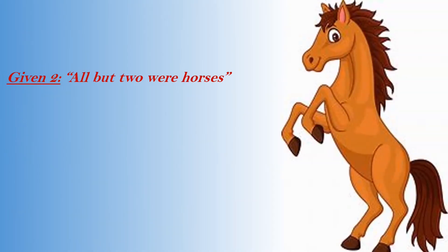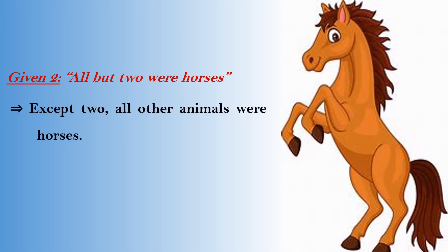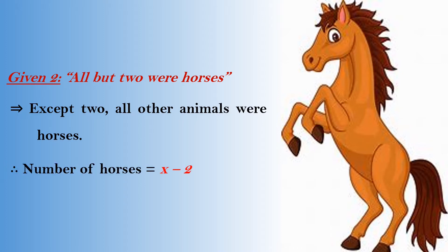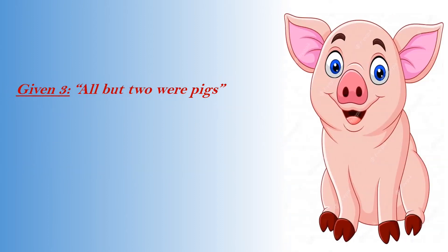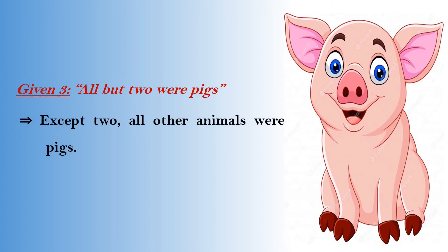It is also given that all but two were horses. This implies that except two, all other animals were horses. Therefore, number of horses equals X minus 2. The question also tells us that all but two were pigs, which implies that except two, all other animals were pigs. Therefore, number of pigs equals X minus 2.